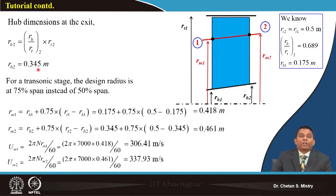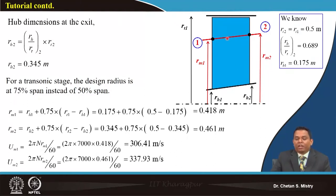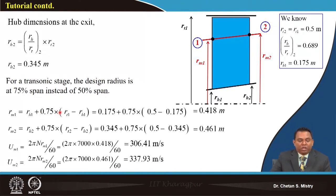To calculate at 75 percent span, we determine the mid-station radii. Drawing inlet and outlet areas based on radii, the mean radius at entry is 0.418 m and at exit 0.461 m. Since peripheral speed is a function of radius, the entry peripheral speed at mid-span is 306.41 m/s and the outlet peripheral speed is 337.93 m/s.